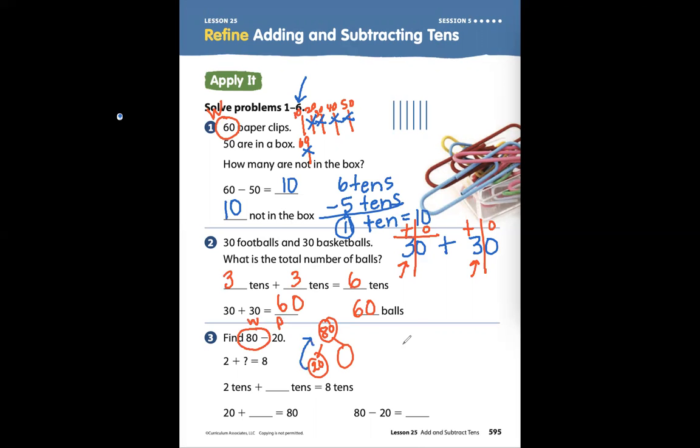From 20 up to 80, right? Or I can think of it like 8 and 2 and blank. 2 count up to 8: 2, 3, 4, 5, 6, 7, 8. That's a difference of 6. So 6 tens, right? 2 tens plus 6 tens is 8 tens.